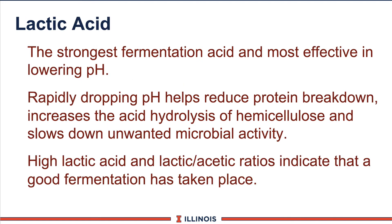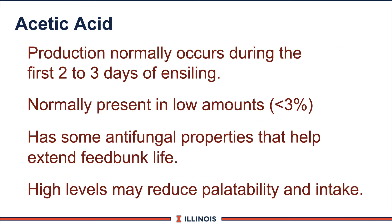Lactic acid is one of the strong acids produced during the silage fermentation process. This is actually the acid that pickles your silage and drops the pH. Typically we're expecting to see values of three to six percent lactic acid in silage fermentations. Acetic acid comes from the aerobic phase of the fermentation process, usually the first two to four days unless it's improperly ensiled or too dry. This number normally is around one or two percent and has some advantage in extending bunk life.